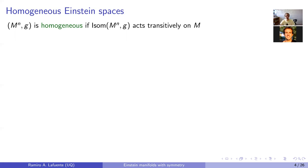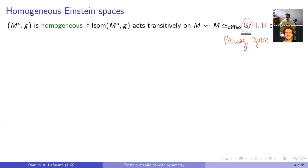What are homogeneous Riemannian manifolds? A Riemannian manifold is called homogeneous when its isometry group acts transitively on it, so there's enough symmetry to map any point onto any other point by an isometry. It turns out that such a space is always diffeomorphic to a homogeneous space — the quotient G/H, where G is a subgroup of the isometry group acting transitively and H is the isotropy group at some point.